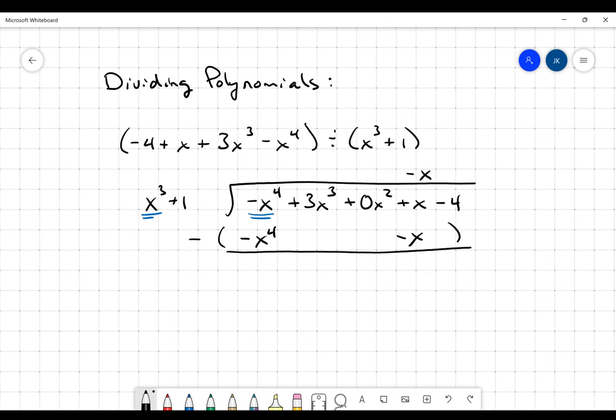3x cubed minus no x cubed is going to be 3x cubed. 0x squared minus 0x squared is going to be 0x squared. x minus negative x, that is going to be positive 2x. Remember we're subtracting a negative, so positive 2x. And then negative 4 minus 0 is just going to be negative 4.